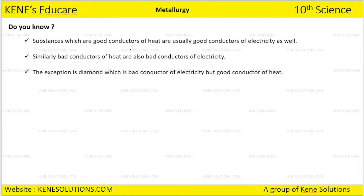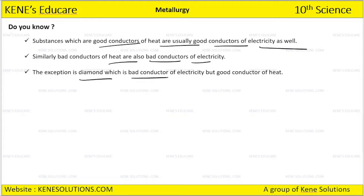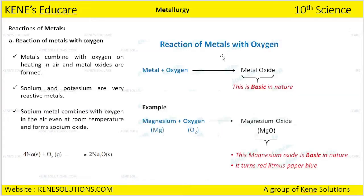Substances which are good conductors of heat are usually good conductors of electricity as well. Similarly, bad conductors of heat are also bad conductors of electricity. Exception: diamond is a bad conductor of electricity but is a good conductor of heat.